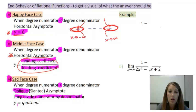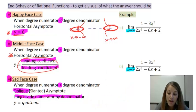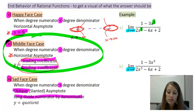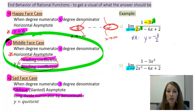This is just a review of what we already know. Looking at the example, we want the end behavior on the right and the end behavior on the left. In the numerator I have degree 3, and in the denominator I also have degree 3. That puts me in middle face case, so I just need to look at my leading coefficients to figure out what my horizontal asymptote is.